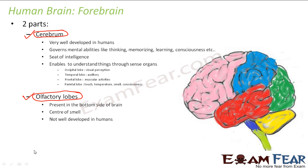Cerebrum governs all the mental abilities like thinking, memorizing, learning, and consciousness. It is the seat of intelligence. That is what makes human beings special compared to all other animals — because the cerebrum in human beings is very well developed, giving them intelligence to think, find out new ways, and invent new things.